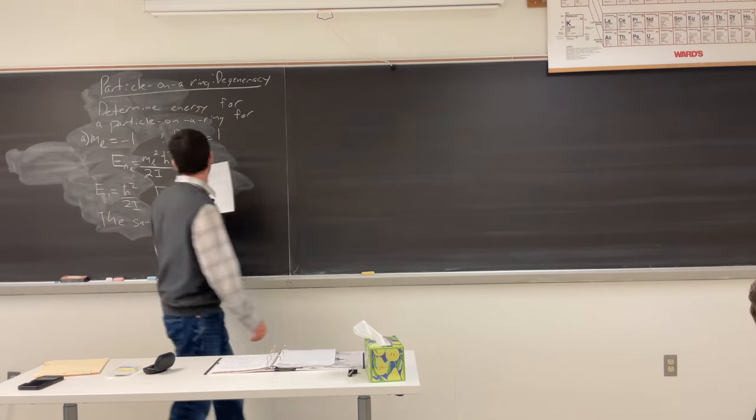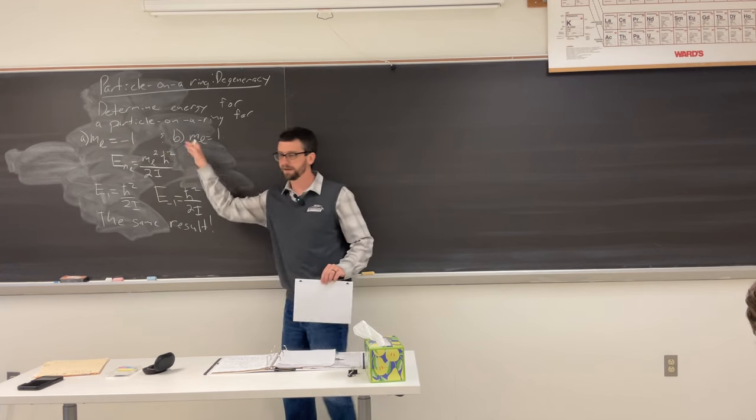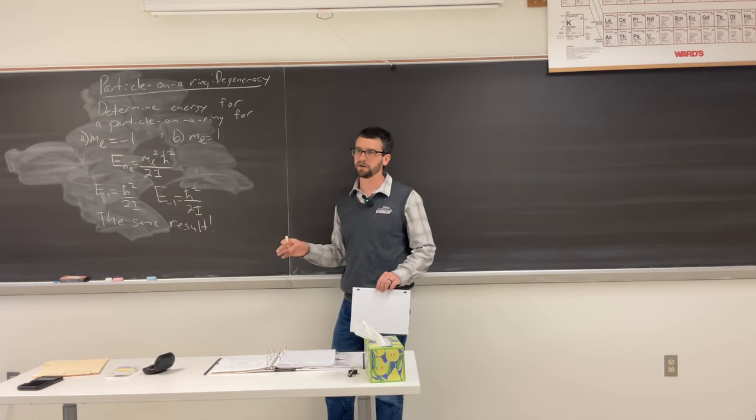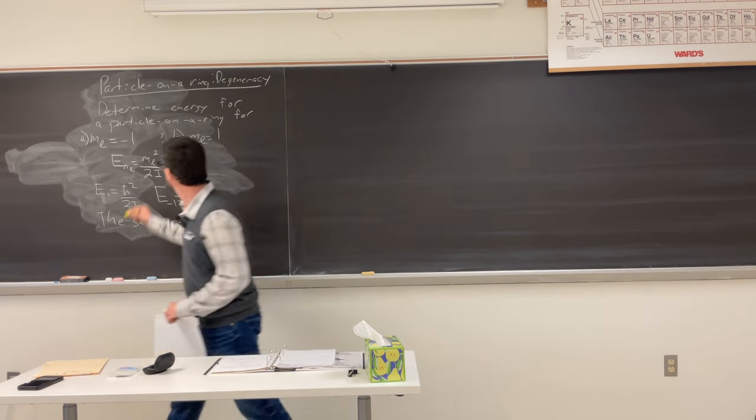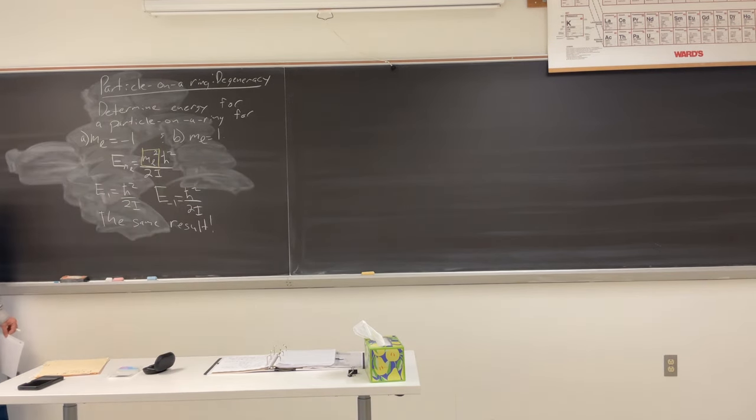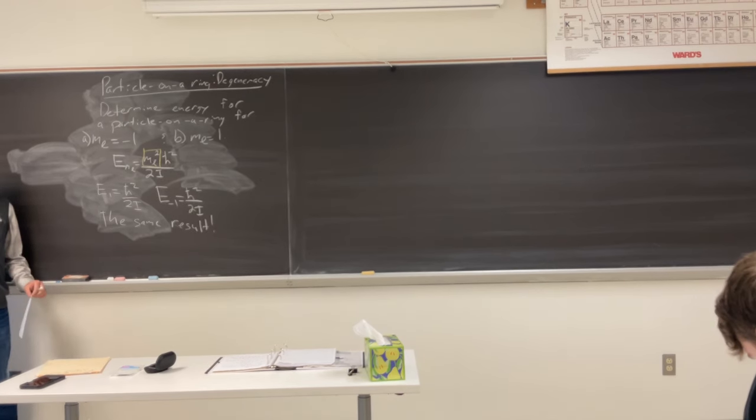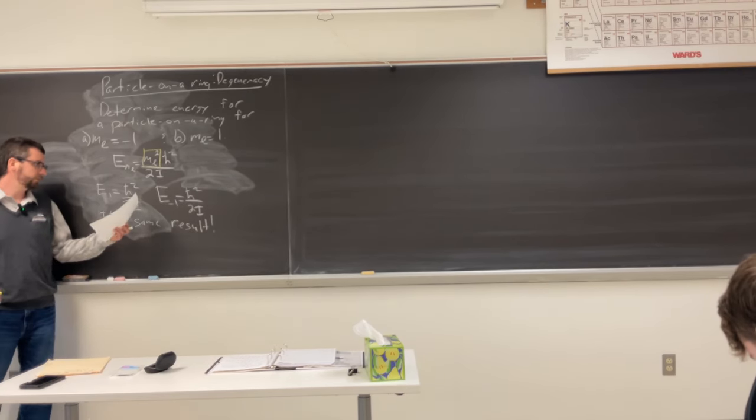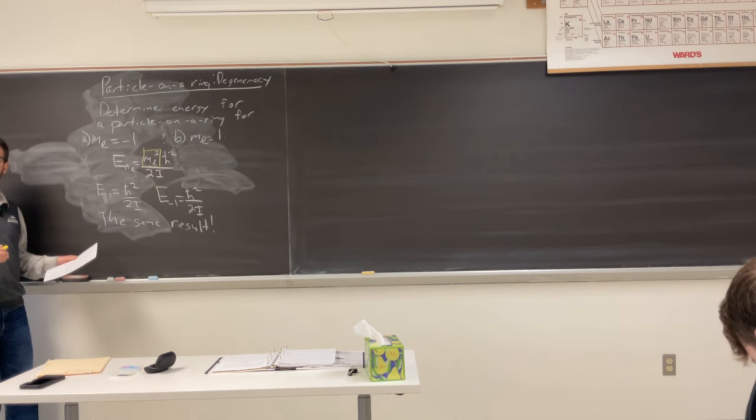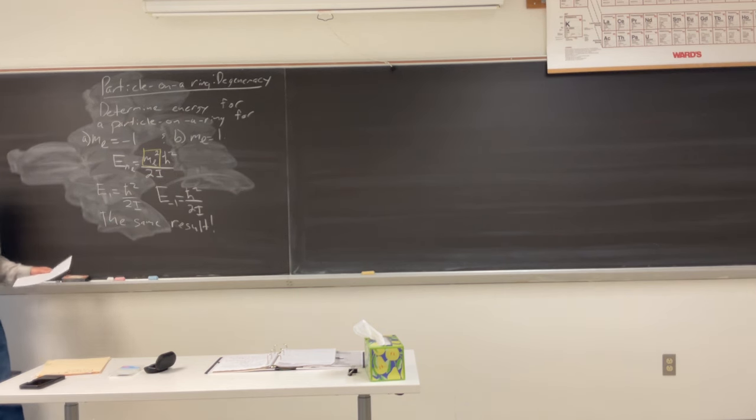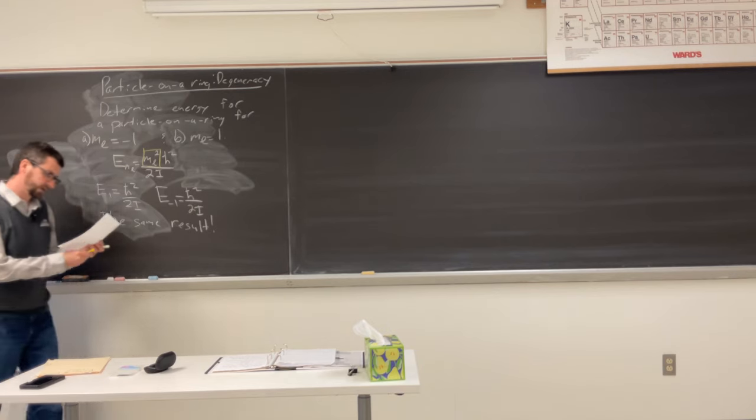What makes, mathematically, what in here makes it so that those things are degenerate? This square right here basically ensures the absolute value. Whenever you look at different ml values that their absolute values match, you're going to run into a degenerate system.